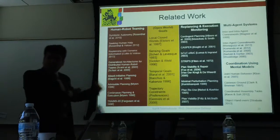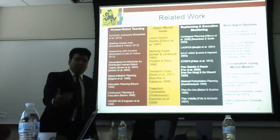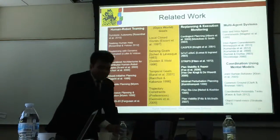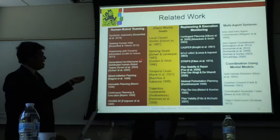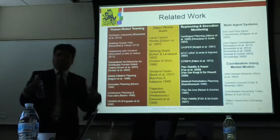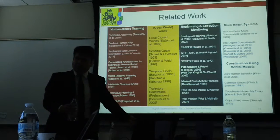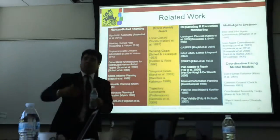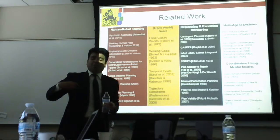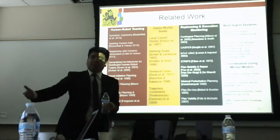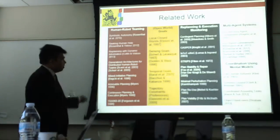Related work includes Manuela Veloso's group on symbiotic autonomy — a robotic agent and human agent in a symbiotic relationship. Ryan Coulton worked on replanning with dynamic information in symbiotically autonomous scenarios. There's also been a lot of work on mixed-initiative planning in the automated planning community — the idea that humans should be part of the planning process, giving information to help the planner search better or indicating which plans are preferable.